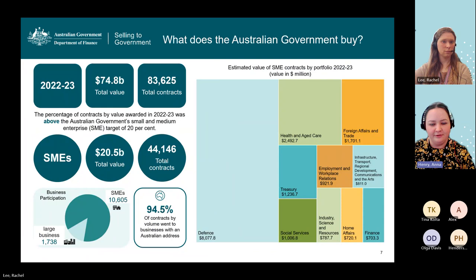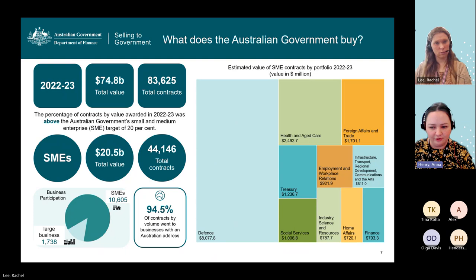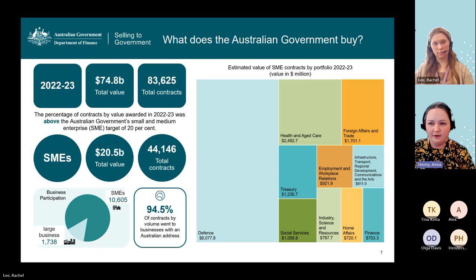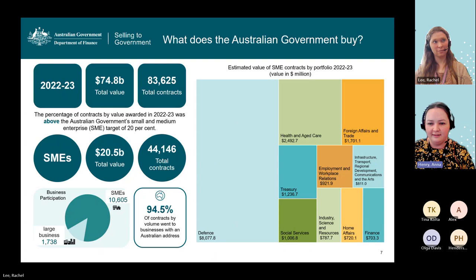Looking at the 2022–23 Australian Government spend breakdown: the total value was $74.8 billion across over 83,000 total contracts awarded to businesses. More than 44,000 of these contracts, valued at nearly $20.5 billion, were awarded to SMEs. 94.5% of contracts by volume went to businesses with an Australian address, and 86% of Australian Government suppliers in 2022–23 were estimated to be SMEs. The top 10 portfolios contributed to 90.2% of the estimated total value of contracts awarded to SMEs, with Defence being considerably the largest.